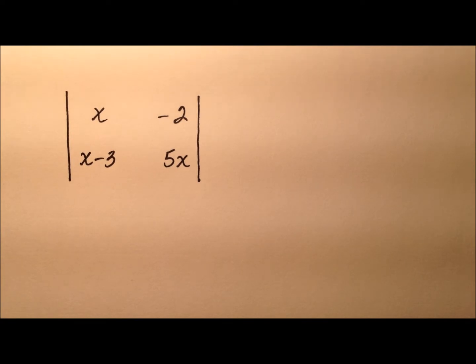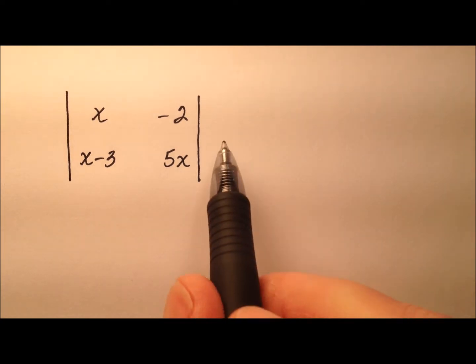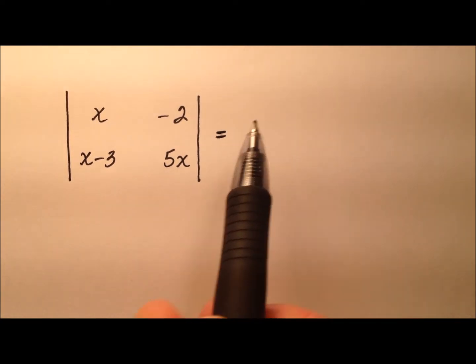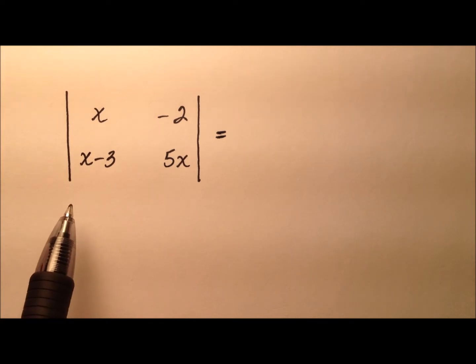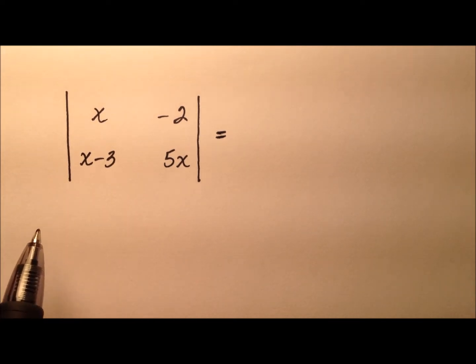In this example, we're going to evaluate this determinant. It looks like we have a nice 2 by 2 square matrix. In order to evaluate the determinant, we need to do a couple of multiplications and then combine them together with subtraction.